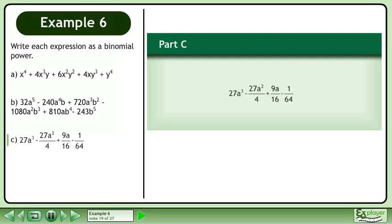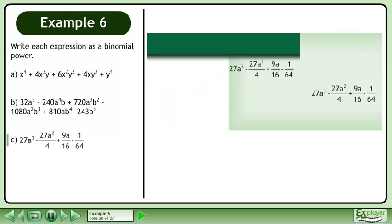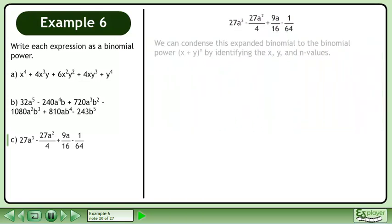In part C, write the expression shown as a binomial power. We can condense this expanded binomial to the binomial power x plus y raised to the power of n by identifying the x, y, and n values.